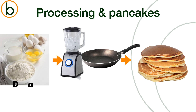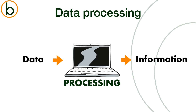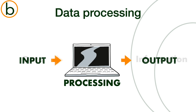It's just the same with data and information. Data are the loose ingredients that you need to combine to get information. Combining that data, processing that data, is what the computer does. When we put data into the computer, we call it input. When we extract the information from the computer, we call it output.